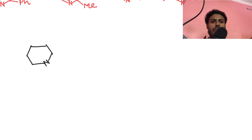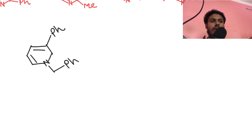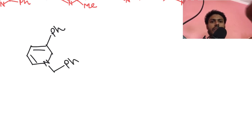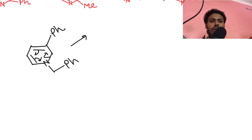So here we have one double bond, here we have another double bond, here we have a phenyl group, and here we have a CH2Ph group. This is our starting material. Now, if it undergoes an electrocyclic ring opening reaction, what product will you get?